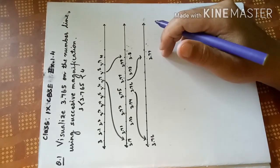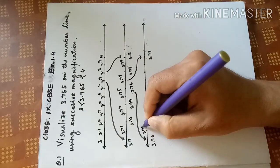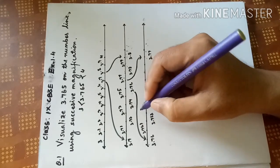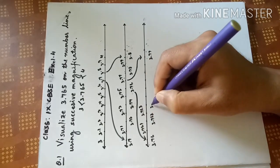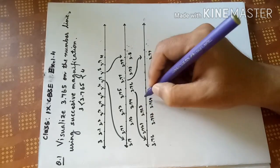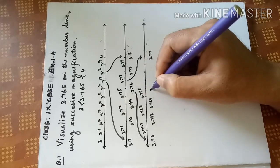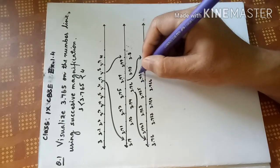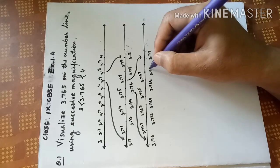So we have 3.76, 3.761, 3.762, 3.763, 3.764, 3.765, 3.766, 3.767, 3.768, 3.769, 3.77.